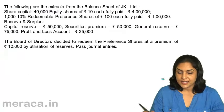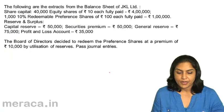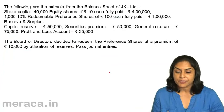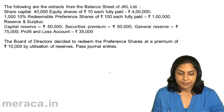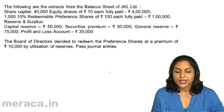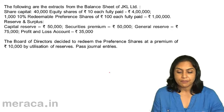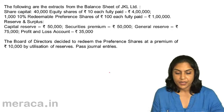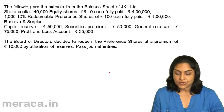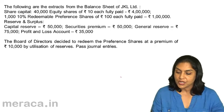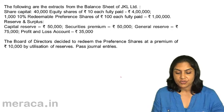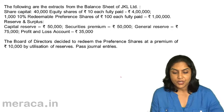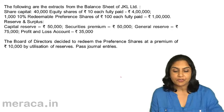Let us take an example. The following are extracts from the balance sheet of JKL Limited. Share capital: 40,000 equity shares of ₹10 each — ₹4 lakh; 1,000 10% redeemable preference shares of ₹100 each fully paid — ₹1 lakh. Reserves and surplus: capital reserve ₹50,000; securities premium ₹50,000; general reserve ₹75,000; profit and loss account ₹35,000.